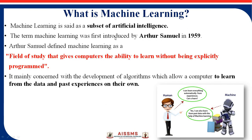The next question is: what exactly is machine learning? Machine learning is a subset of artificial intelligence. The term machine learning was first introduced by Arthur Samuel in 1959. Basically, machine learning is the study of computer programs and their ability to learn without being explicitly programmed. Machine learning means they learn from historical data, from particular facts or information, and as per that information, they take a particular decision.